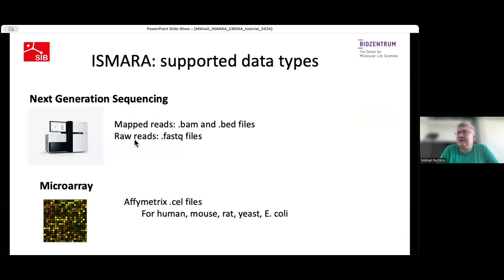ISMAR is designed to analyze gene expression data. It accepts results of next-generation sequencing, either in the form of raw reads in FASTQ format or mapped reads in BAM or BAT format. ISMAR can also process microarray data. It was originally designed to support Affymetrix microarray chips, and we now have support for various chips for human, mouse, rat, yeast, and E. coli.